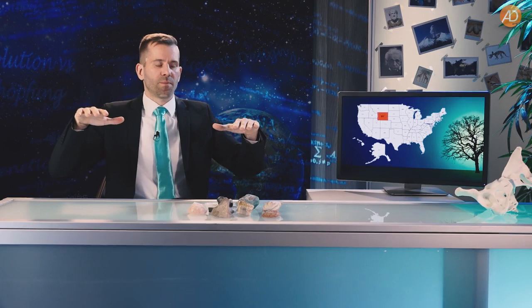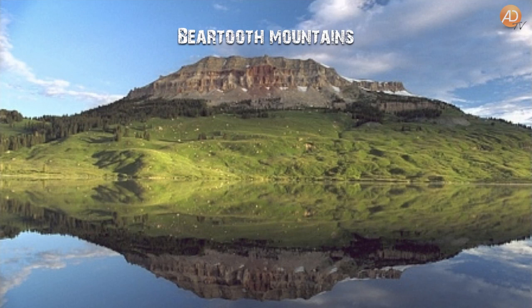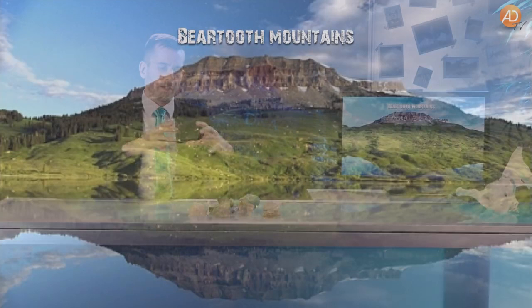Wollen wir uns mal eine Ecke angucken, gemeinsam sozusagen zu den Fossilien graben. Wir gehen nach Wyoming in die USA. In Wyoming gibt es ein Gebirge, das nennt sich die Big Horn Mountains auf der einen Seite und auf der anderen Seite die Beartooth Mountains – zwei große Gebirgsketten, die beide getrennt sind von dem sogenannten Big Horn Basin. Obendrauf auf diesen Beartooth Mountains sitzt der sogenannte Beartooth Butte, ein Berg, der aussieht wie der Zahn eines Bären.